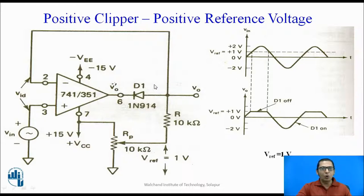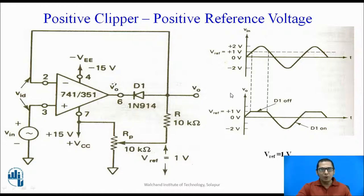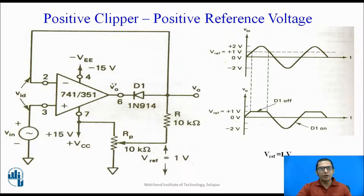During the positive half cycle, the voltage at the inverting terminal is equal to the reference voltage, which in this example is one volt. As long as Vin is rising from zero and is less than one volt, the output of the op-amp is negative. When the output is sufficiently negative, the diode turns on. When the diode is on, the feedback path is completed, and the circuit behaves as a simple non-inverting voltage follower. So the output voltage is equal to the input voltage.